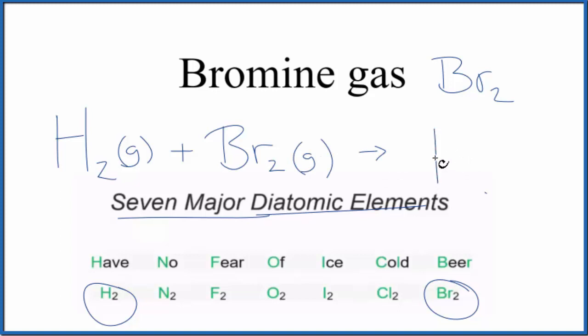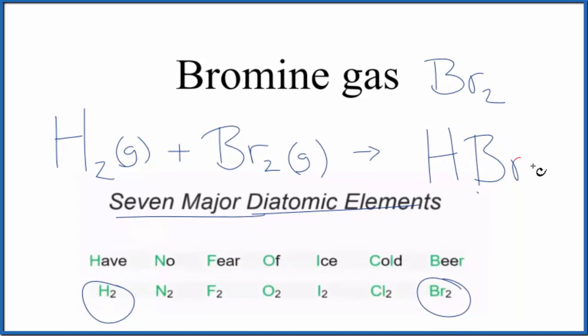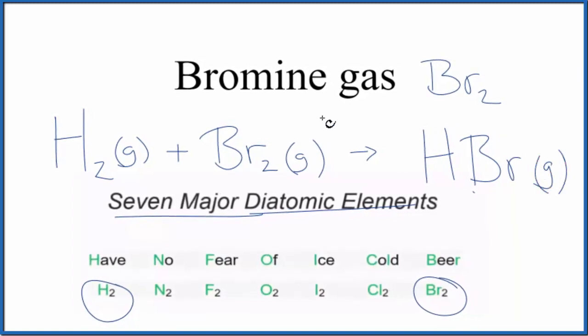They would combine to form hydrogen bromide, which is a gas here. You probably should balance this since we have two bromines, just one here, two hydrogens. You should just put a two here. So that's the balanced equation.